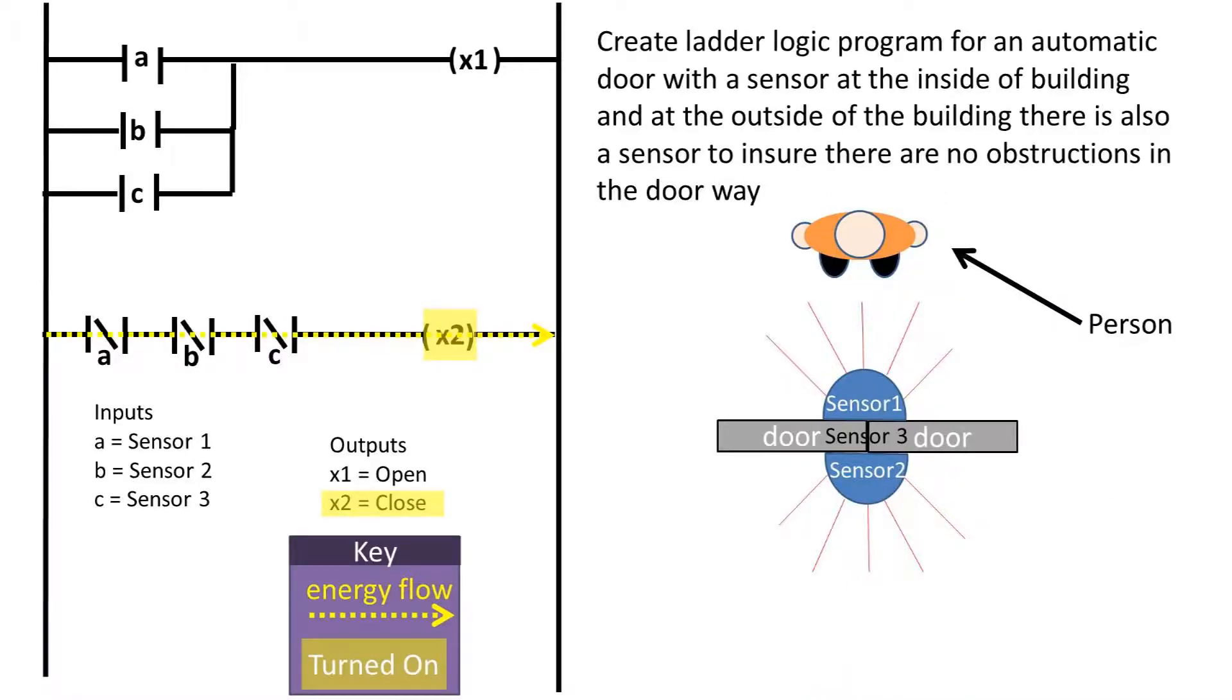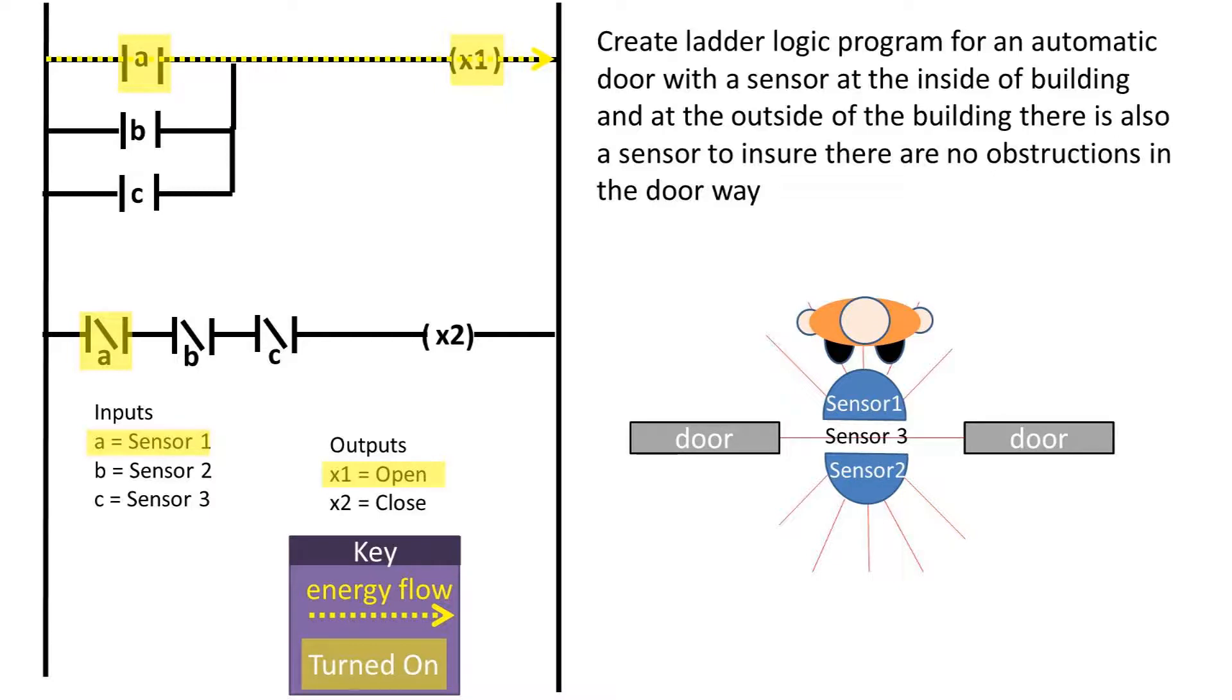So now, let's do a literal walkthrough of this problem. First, the person is in range of the first sensor, which activates the coil and opens the door.